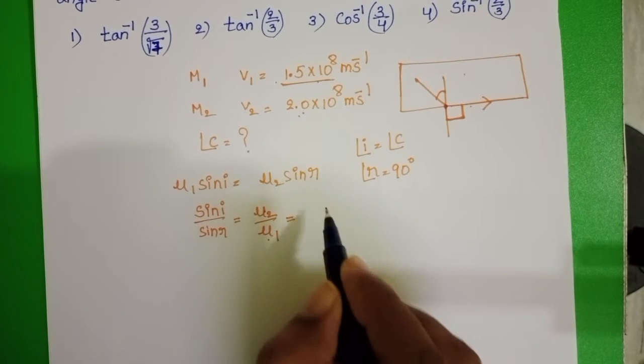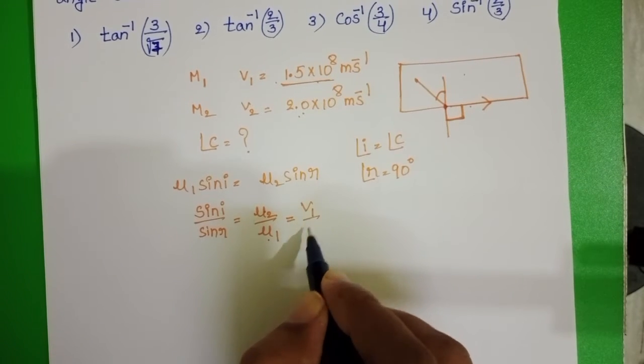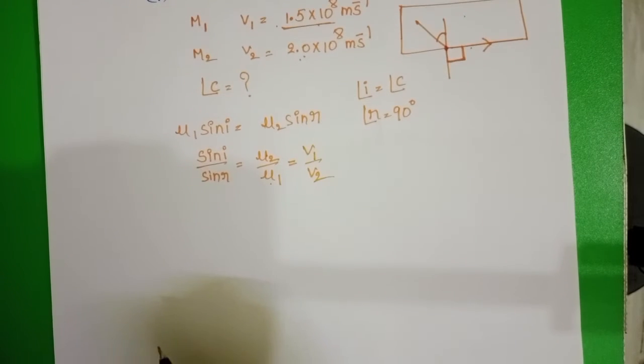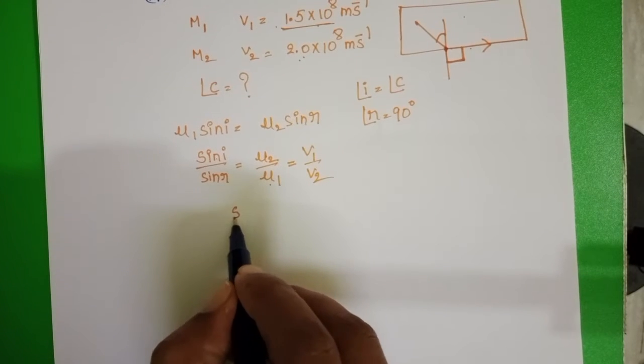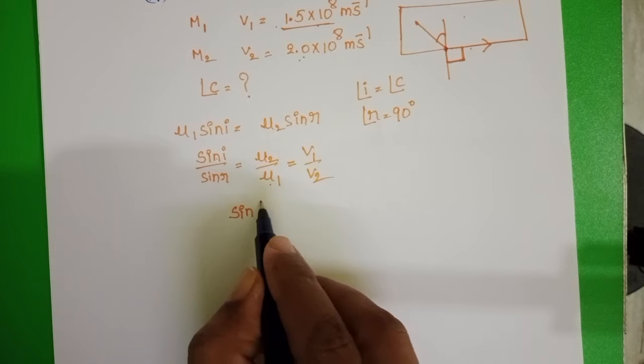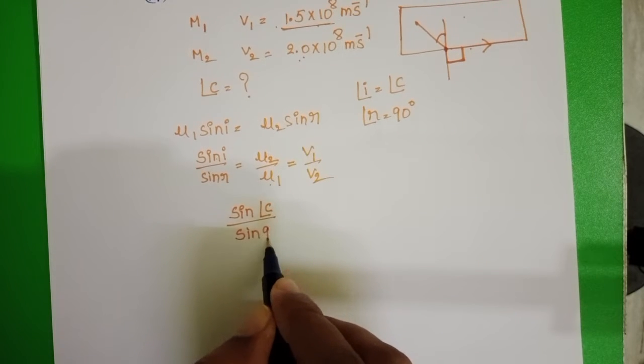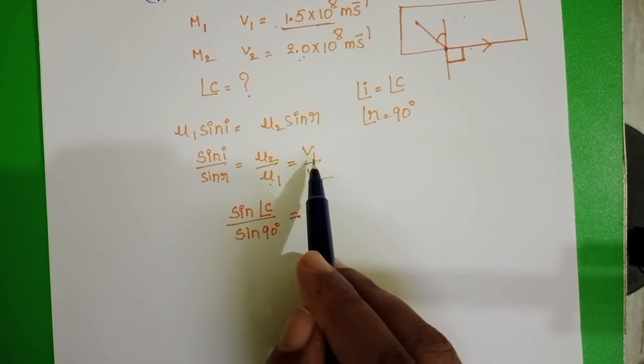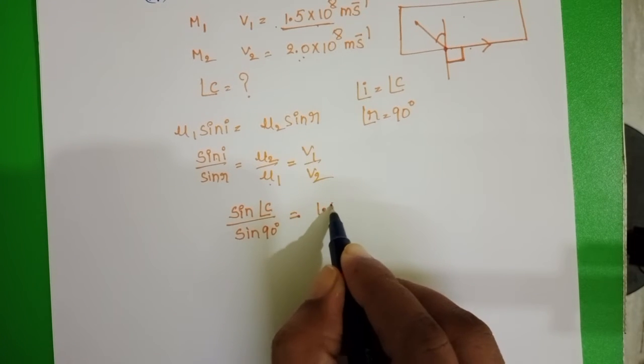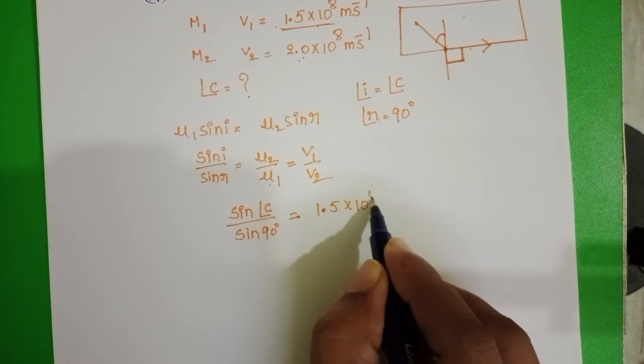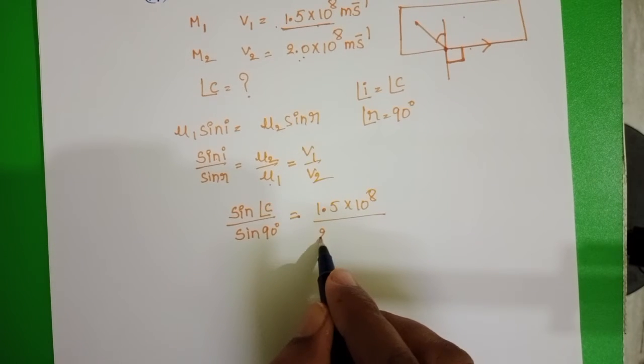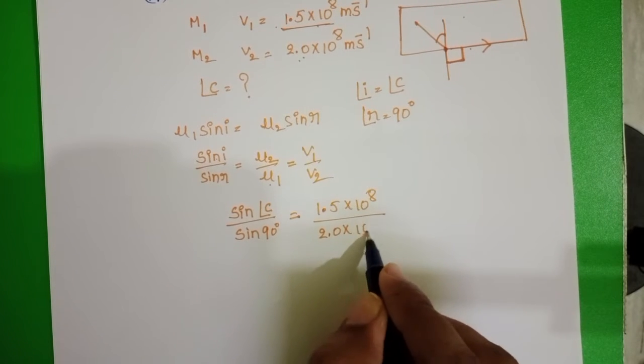So in place of mu2 by mu1, take V1 by V2. Angle of incidence is critical angle. Sin c by sin 90 degrees equals, in place of V1, 1.5 into 10 power 8, and V2, 2.0 into 10 power 8.